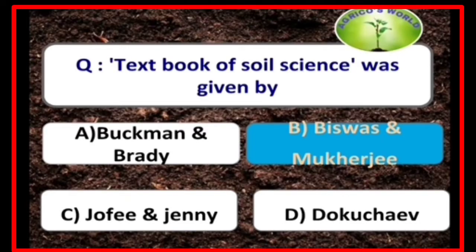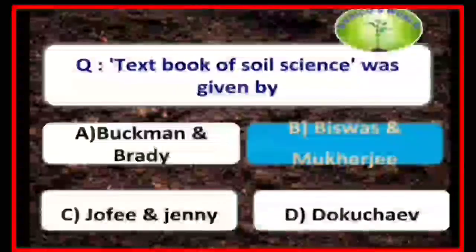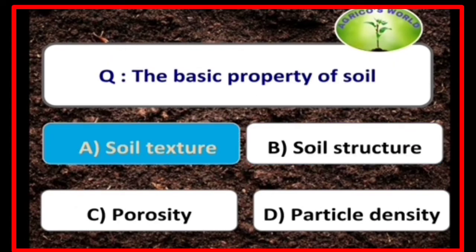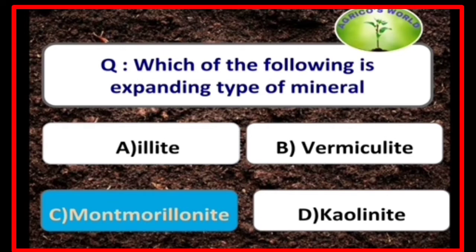The textbook of soil science was given by Biswas and Mukherjee. Soil texture is the basic property of the soil and it cannot be changed. Montmorillonite is the expanding type of mineral.